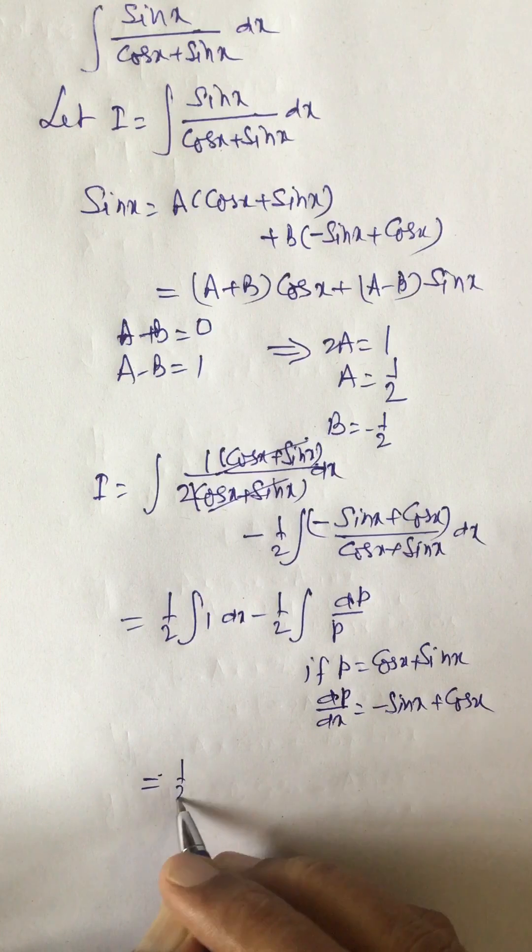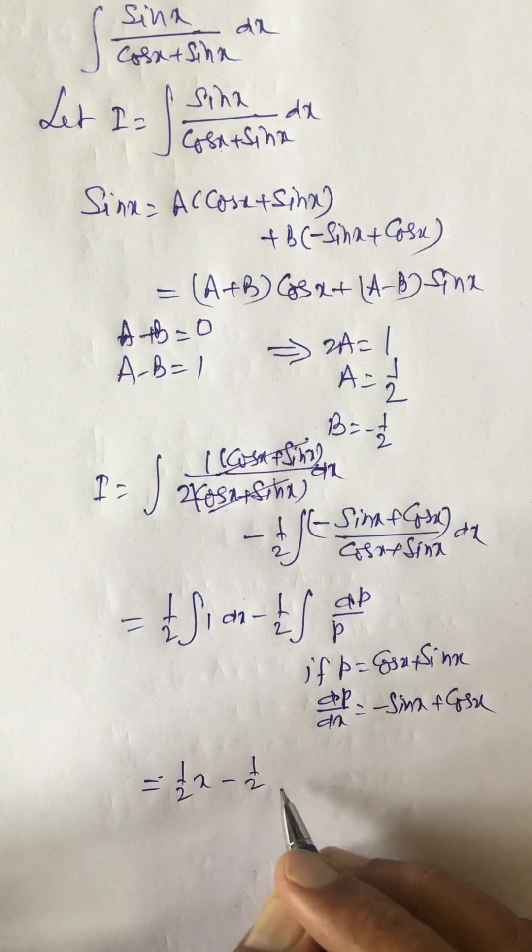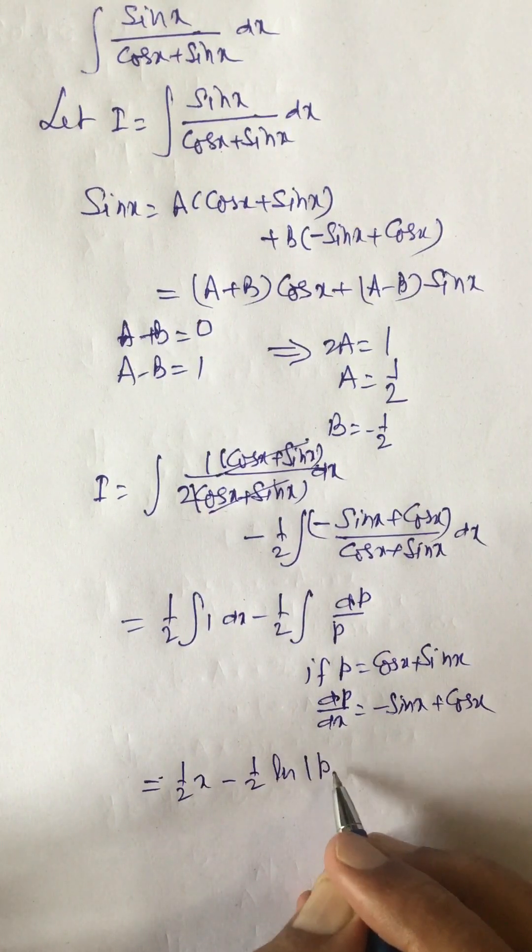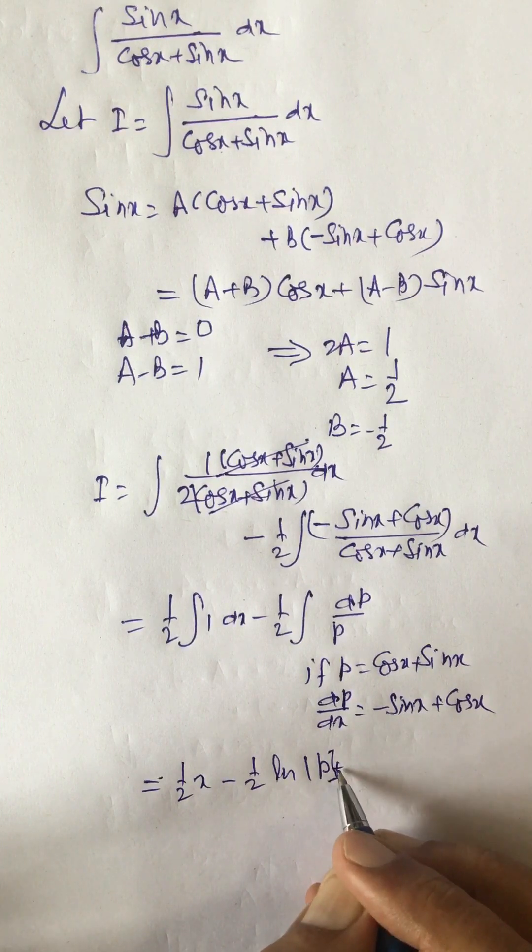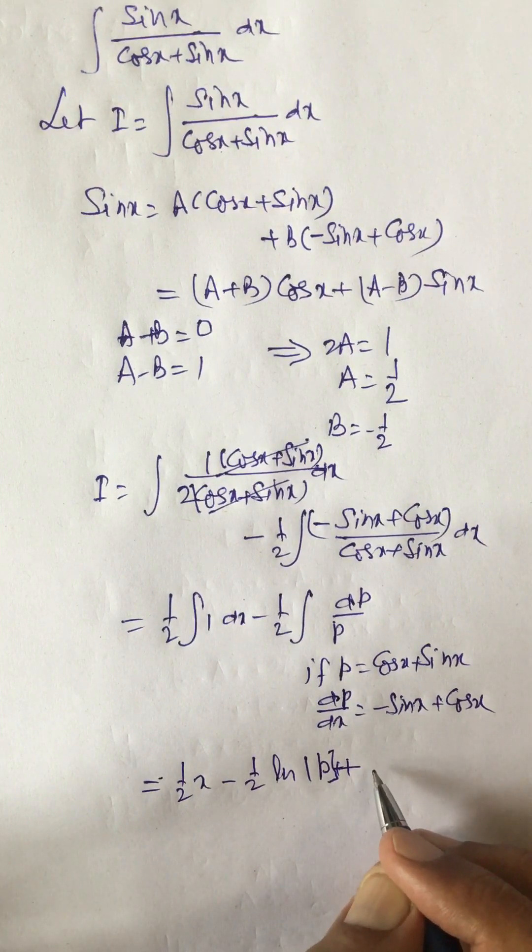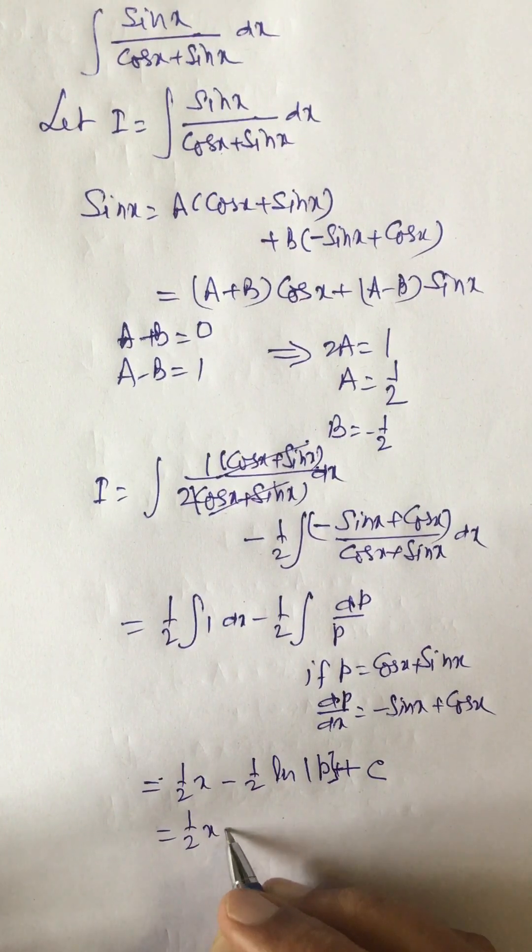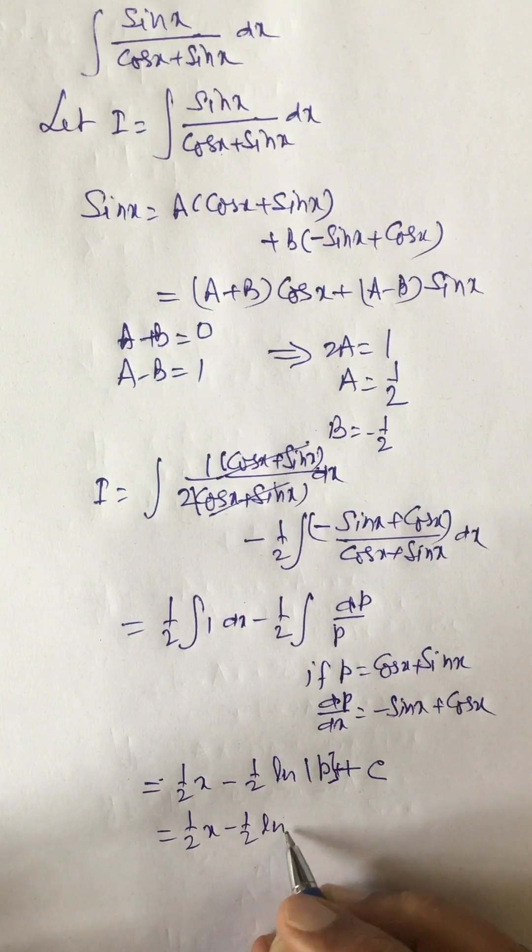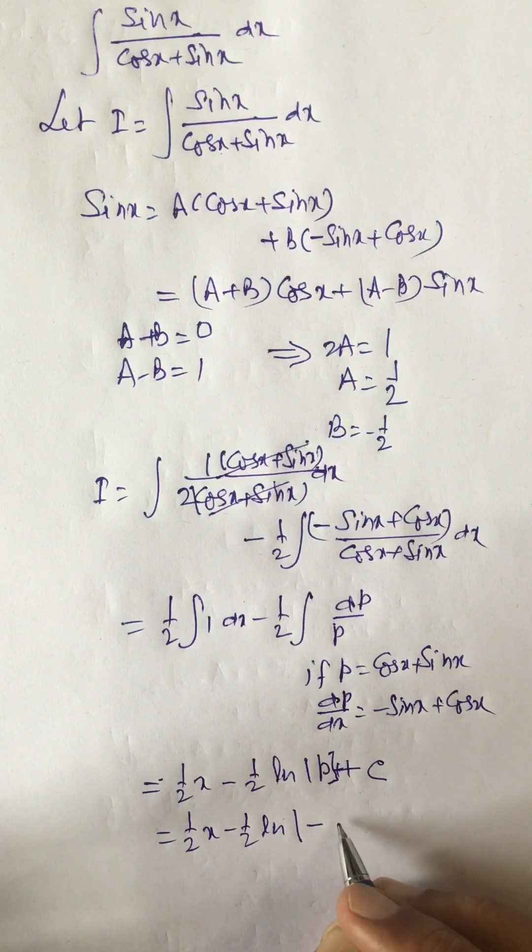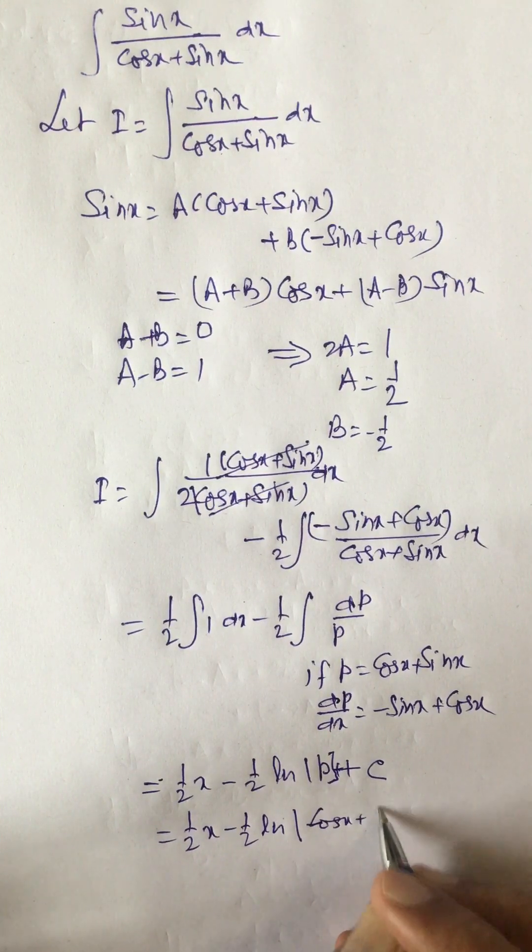Integrating this we get half x minus half log p plus some constant. Putting value of p, this becomes half x minus half log of cos x plus sin x plus C.